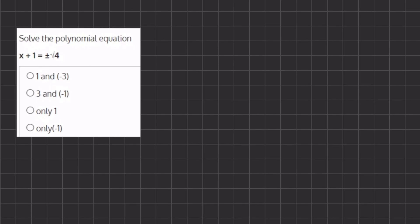All right, so for this problem, we are solving for the polynomial equation, and let's begin by first solving what this radical 4 will be.